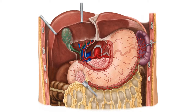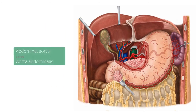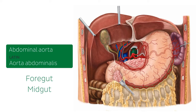Before we discuss the arterial branches that supply these organs, I would just like to remind you of a few introductory points. As you may remember from your embryology courses, the primitive gut tube can be divided into three regions: namely the foregut, the midgut and the hindgut regions. The boundaries of these three regions are directly related to the areas of distribution of three anterior branches of the abdominal aorta, a part of which is seen here highlighted in green.